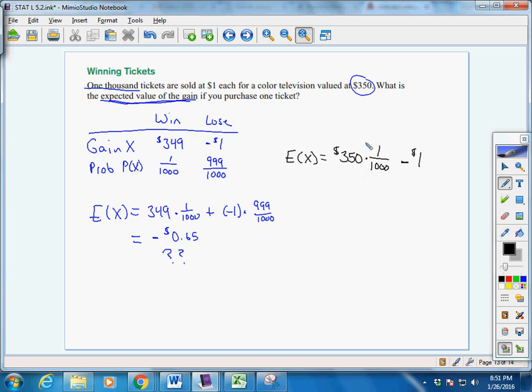So here we're kind of taking the dollar off right away, and we're saying we got 349 times 1 out of 1,000. Or we can say let's just do the full value, 350, one chance out of 1,000 winning, and then subtract off our dollar at the end. If you were to figure that out, you're going to get the same thing: negative 65 cents.